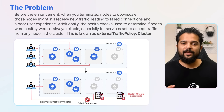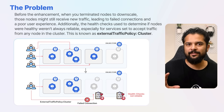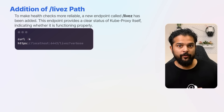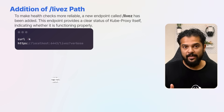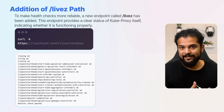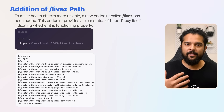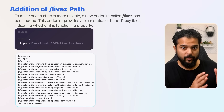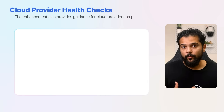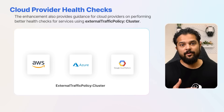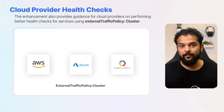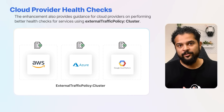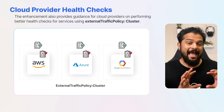In our online store example, using external traffic policy cluster could lead to problems if terminating nodes still receive traffic — this enhancement solves that. To make health checks more reliable, a new endpoint called liveZ has been added. This endpoint provides a clear status of Kube Proxy itself, indicating whether it is functioning properly. Unlike previous health checks, this one focuses solely on the health of Kube Proxy, making it a better indicator of its actual status, avoiding false positives or negatives. This enhancement also provides guidance for cloud providers on performing better health checks for services using the external traffic policy cluster option, improving overall reliability across different cloud environments.